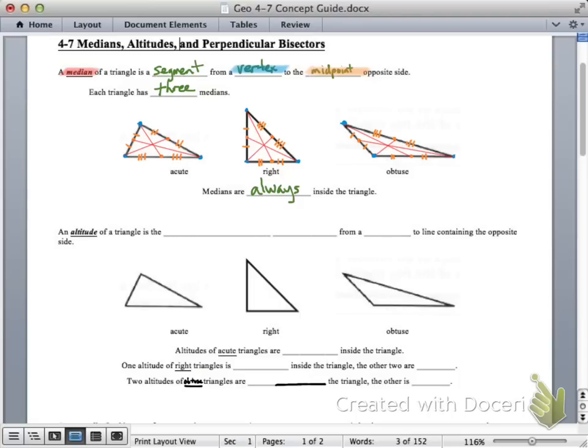All three medians are always inside the triangle. And if you notice there, it looks like the three medians intersect at the same point. And if I did this perfectly correctly, which I came close to doing, that's true. The three medians intersect at what's called the centroid of the triangle, which is the center of gravity.